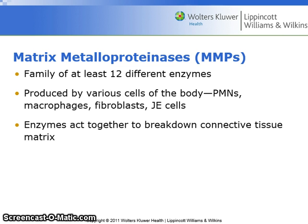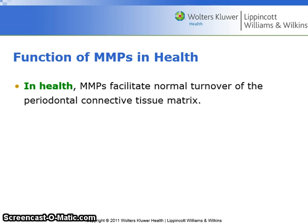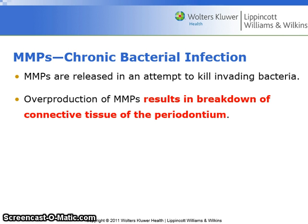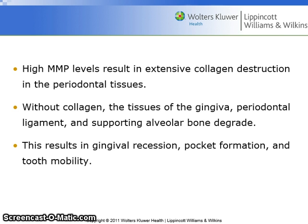Matrix metalloproteinases, or MMPs, have a family of at least 12 different enzymes and are produced by various cells of the body such as PMNs, macrophages, fibroblasts, and junctional epithelium cells. Enzymes act together to break down connective tissue matrix. In health, MMPs facilitate normal turnover of the periodontal connective tissue matrix. MMPs are released in an attempt to kill invading bacteria during a chronic bacterial infection. Overproduction of MMPs results in breakdown of connective tissue of the periodontium.